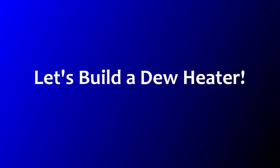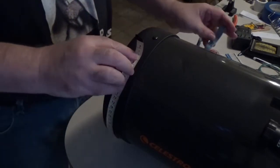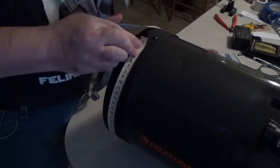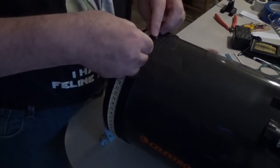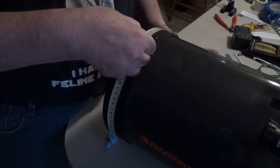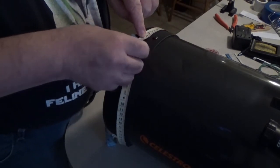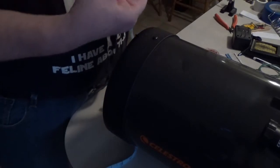So, let's make a dew heater. Start by measuring the actual outside circumference of your scope where your optics are. In the case of my scope, that's 74 centimeters or 29 1/8 inches. I find the first number easier to work with, so I'll call it 740 millimeters.